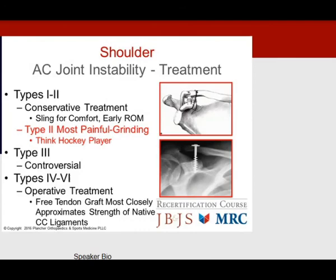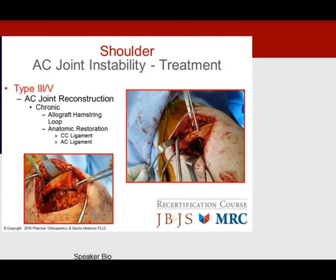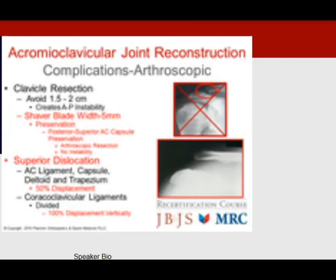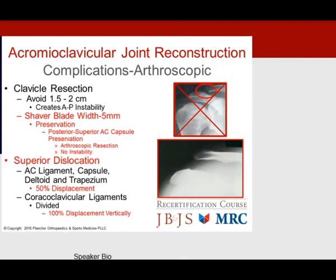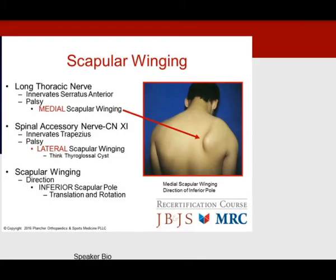Dr. Rockwood described the various types of AC joint instability. Type 2 injuries (as in a hockey player) are most painful because the joint is not fully dislocated, causing constant grinding. For grade 3 or grade 5, conservative treatment or allograft hamstring reconstruction can be considered — beware of the many reported complications. Clavicle resection should be limited to 5 mm (shaver blade width), avoiding 1.5 to 2 cm open resections. Preserve the superior AC capsule; superior dislocation occurs when the AC ligament and posterior capsule are violated. Never divide the coracoclavicular ligaments.